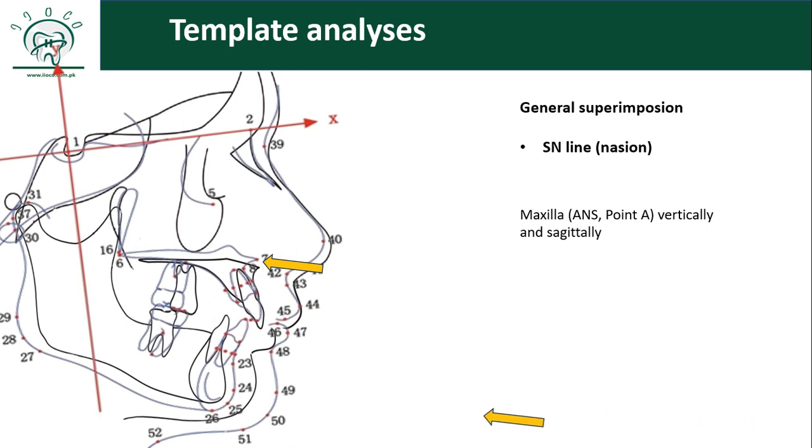However, the mandible seems to be retrogenatic, since the point B, pogonion, gnathion and all other landmarks on the anterior part of the mandible are retruded. In this way, you can do general superimposition and compare the upper and lower jaws of your patient with the norms.